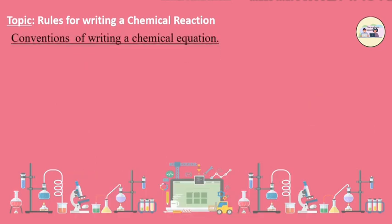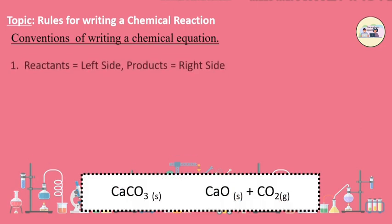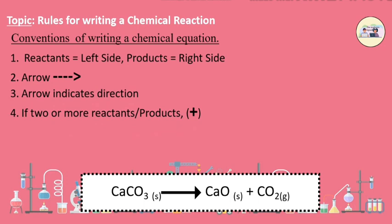Now, let us see some conventions of writing a chemical equation. In a chemical equation, the reactants are written on the left-hand side while the products are written on the right-hand side. An arrow heading towards the product is drawn in between them. This arrow indicates the direction of the reaction. If the reactants or products are two or more, they are linked with a plus sign in between them.